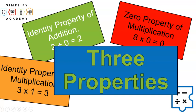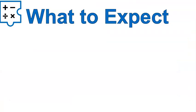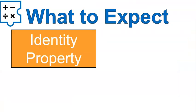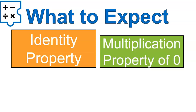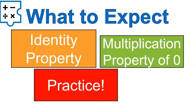Hello, this is Mr. Buffington, and welcome to our Simplify Academy lesson on three properties. We will be talking about the identity property, the multiplication property of zero, or the zero property of multiplication, and we will be practicing.